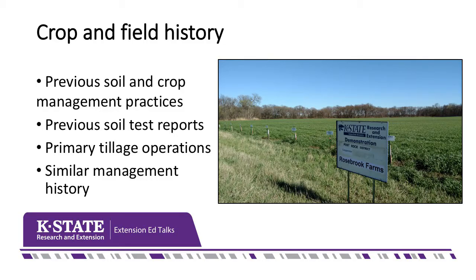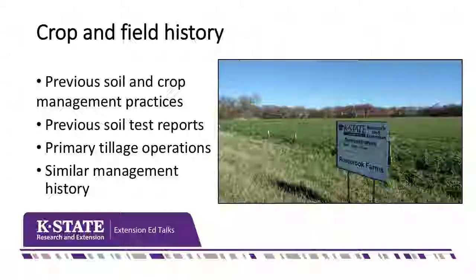Let's take a look at crop and field history. You always want to look at the previous soil and crop management practices you used. Previous soil tests are always really important so you can track the soil test over time. You also want to record primary tillage operations — that can really impact the response of what you're going to get. And lastly, note and document any similar management history that you may have with the test you're wanting to accomplish.